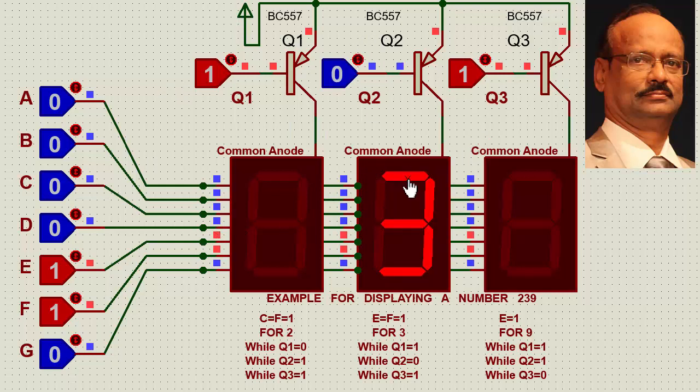So 2, 3. Now similarly, 9 will be displayed when I switch off this. And I know for this, E equals 1 only. That means E equals 1. So I switch off the F logic here also. So E equals 1 for 9. And in this case, this has to be 0 and these 2 will be 1. Now if I make it 0, I find 9 is being displayed here.